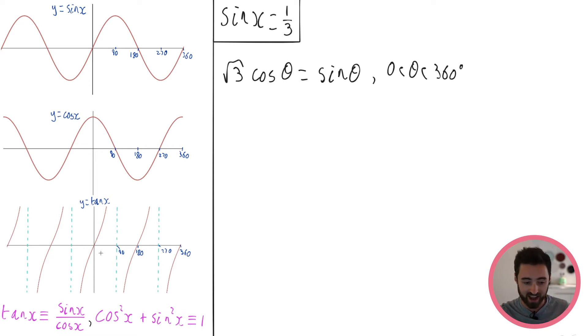And then tan x is kind of the weird younger brother. Doesn't look anything like either of them. It has asymptotes at 90 and then every 180 from there, meaning that it goes up to infinity but never quite hits 90 degrees. And then after 90 degrees it starts again at minus infinity and goes on like that. Tan has a period of 180, meaning that it repeats itself every 180 degrees.